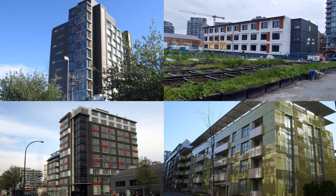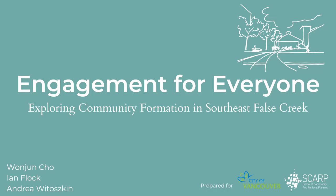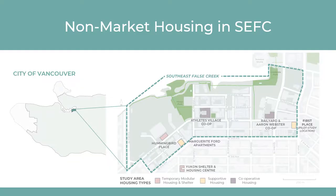Southeast False Creek is a neighborhood where all Vancouverites can call home. Direct planning initiatives have ensured that non-market housing has been included in the neighborhood since the approval of the policy statement in 1999. These maps provide context for where Southeast False Creek is within the city of Vancouver and identify the non-market housing in Southeast False Creek.